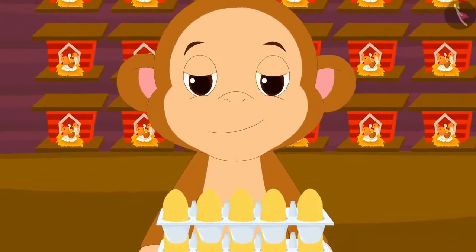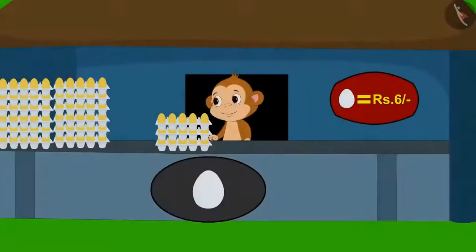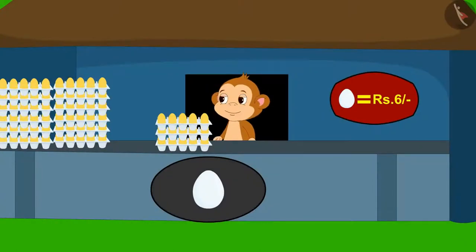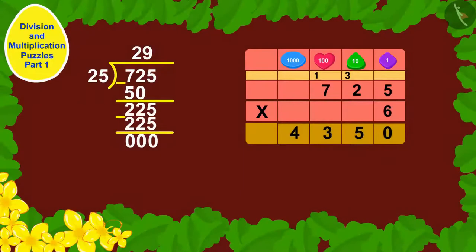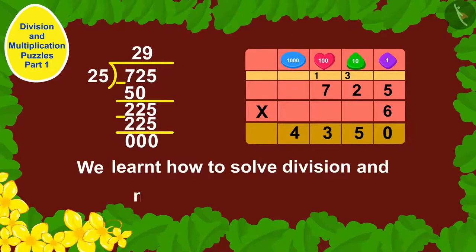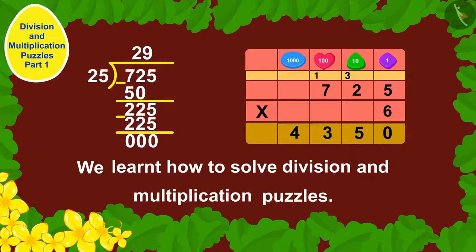Babban was very happy and opened a new shop and started selling eggs. Children, in this video we learned how to solve division and multiplication puzzles. In the next video, we will see some more interesting examples of this.